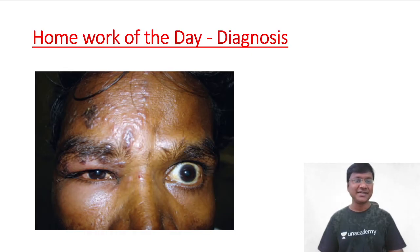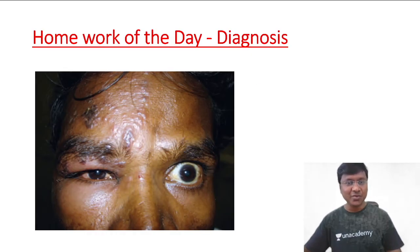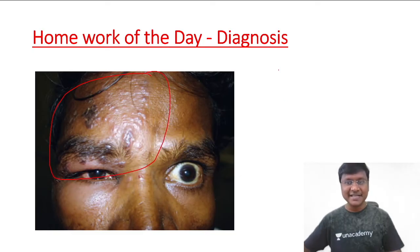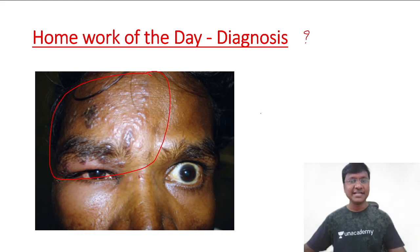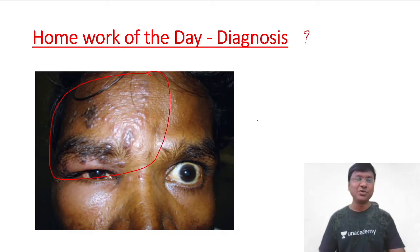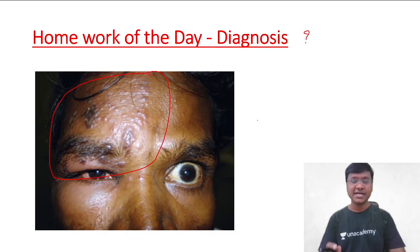For the homework of the day, I have an image related to the trigeminal nerve with a region circled in red. Tell me the diagnosis of this clinical condition — it is an infection — and which particular division of the trigeminal nerve is affected in this patient. Please answer in the comment box and I will get back to you with the correct answer.